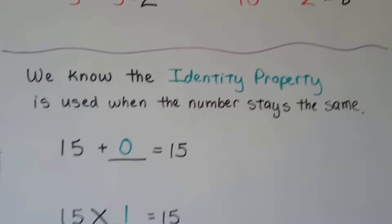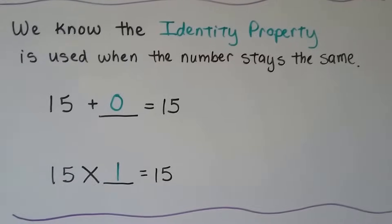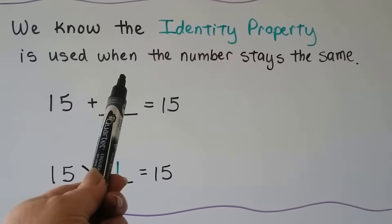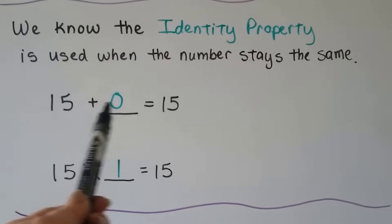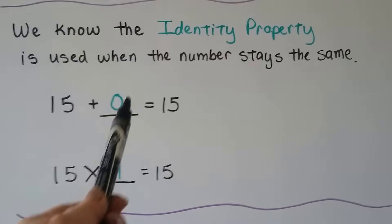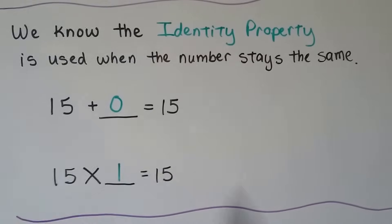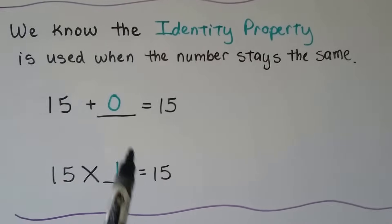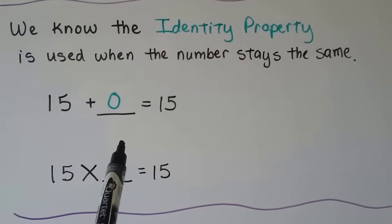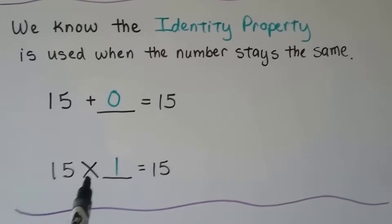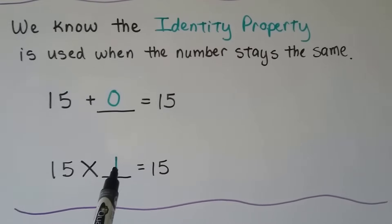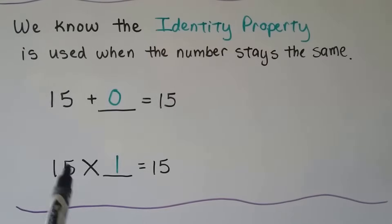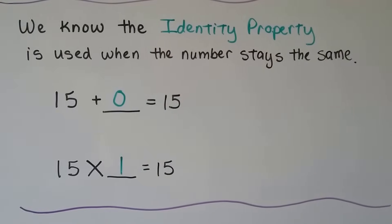The identity property is used when a number stays the same. If we're given 15 plus something equals 15, we see an addition sign and know it must be 0, because the sum is the same as the add-in. And if we see 15 times something equals 15, because it's multiplication, that must be 1. It's the identity property because the factor equals the product — it kept its identity.